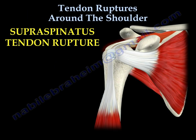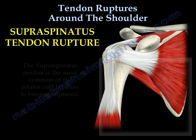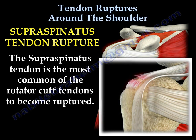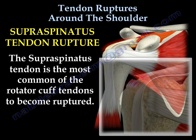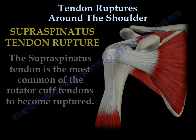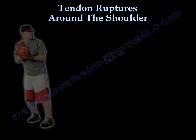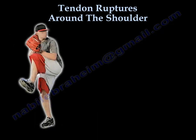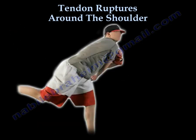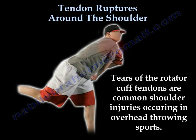The supraspinatus tendon is the most common of the rotator cuff tendons to be ruptured. Tears of the rotator cuff tendons are common shoulder injuries occurring in overhead throwing sports.